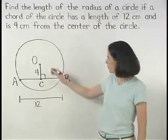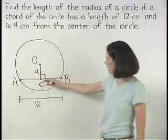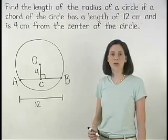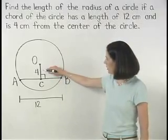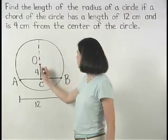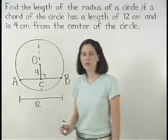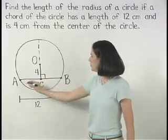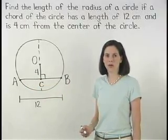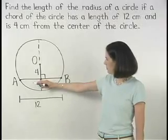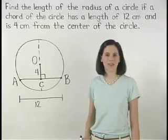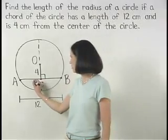Remember that the distance from a point to a segment is represented by the perpendicular to the segment. Now notice that segment OC is part of a diameter of the circle. And remember that if a diameter of a circle is perpendicular to a chord, then it bisects the chord. So segment AB, which has a length of 12, is split into two congruent segments, each with a length of 6.